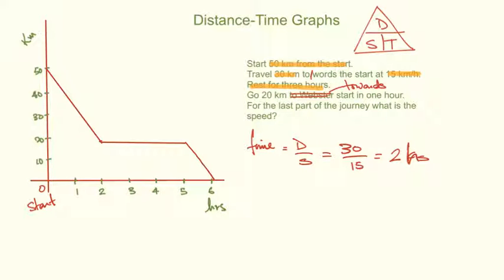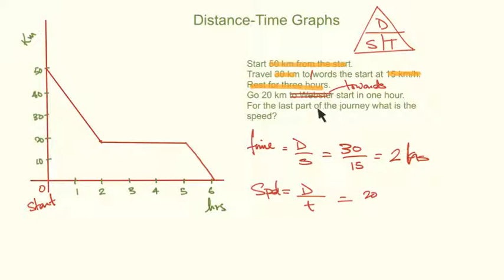Now it says for the last part of the journey, what is the speed? Speed is distance over time. The distance traveled was 20 kilometers — you can read it off the graph. And it was done in one hour. So it's 20 kilometers per hour. And that's it. Now I've got one more question.